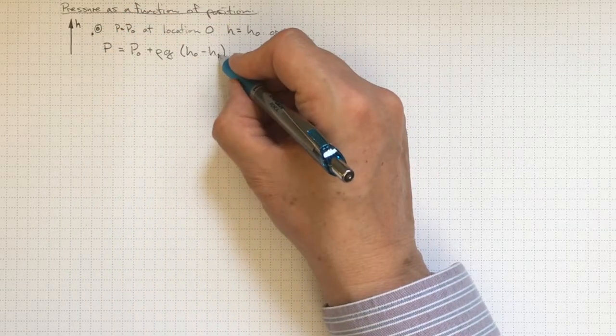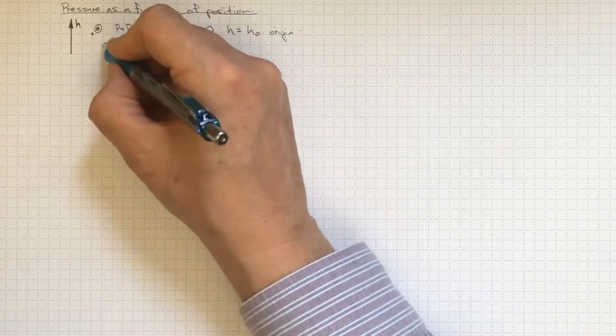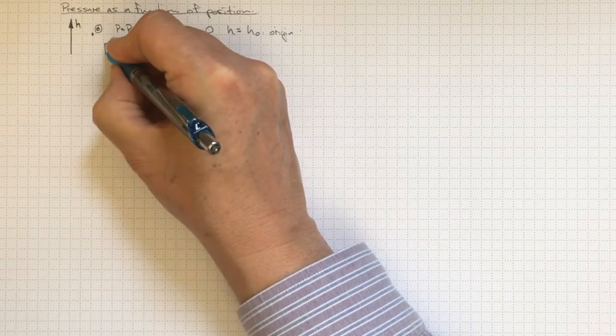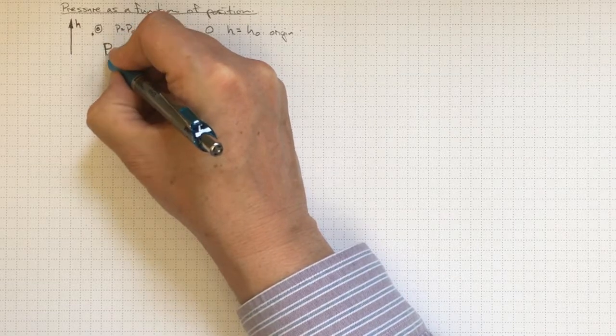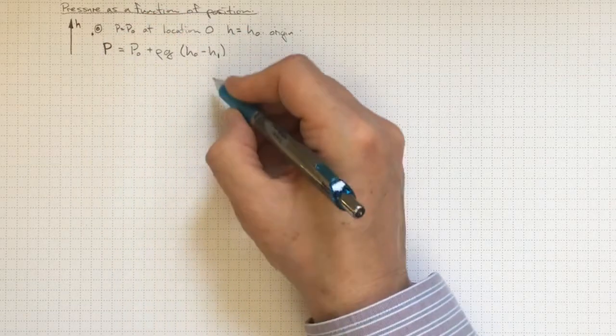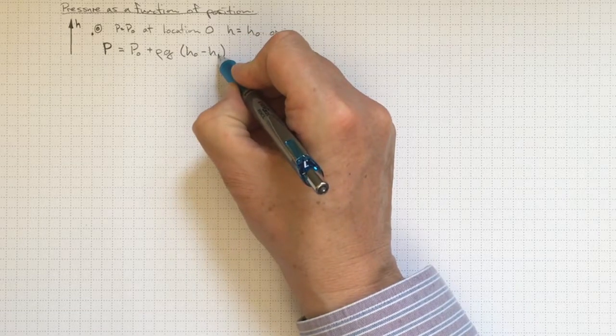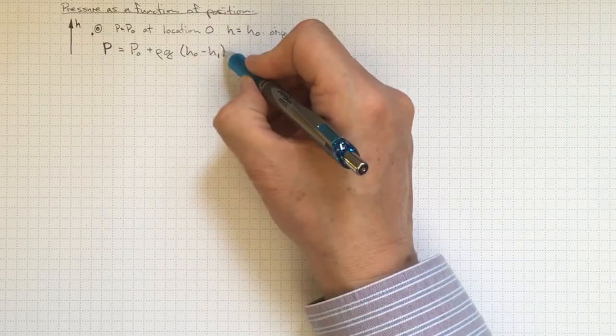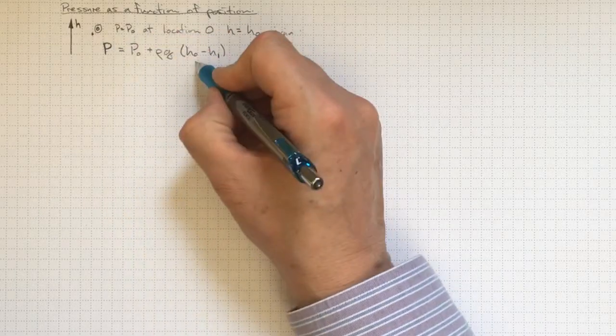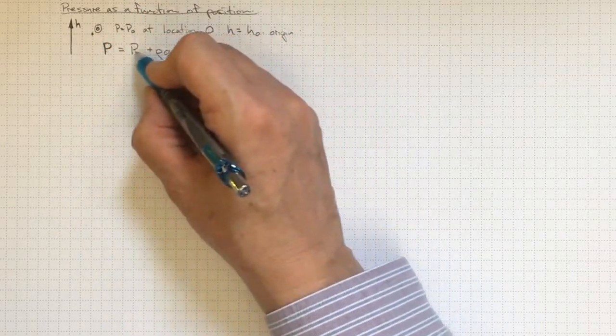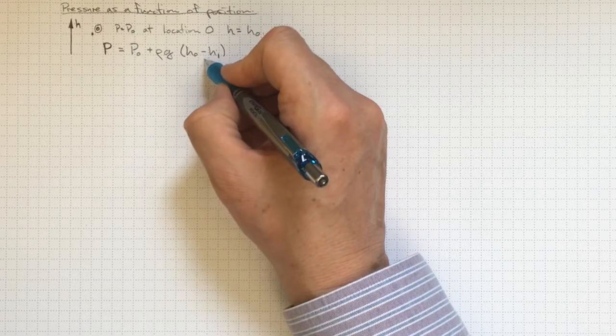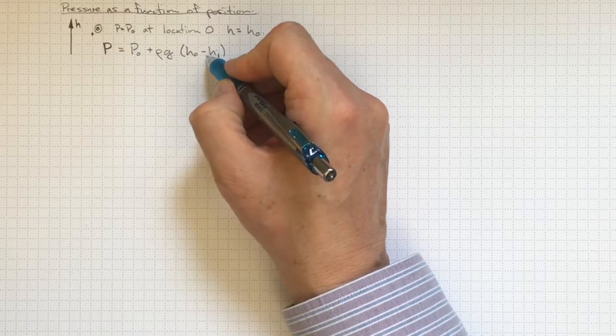Or if it's lower, then h will be smaller, that'll be a positive number, so that'll make up for my signs that I didn't worry about so much in the single point calculations. If h is higher up here, then I'll get a lower pressure. If h is lower down here, then I'll get a higher pressure. So I'm going in the right direction.